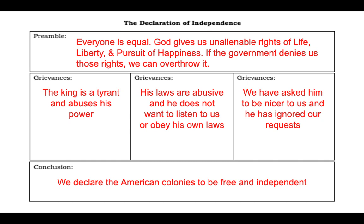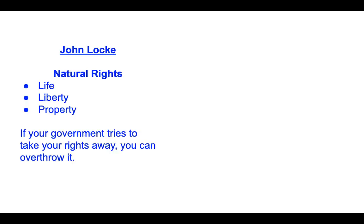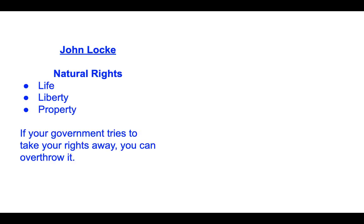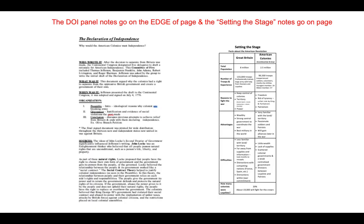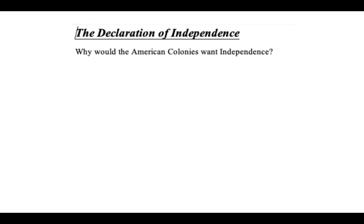That is the end of slide 41, giving a brief look at how the Declaration of Independence was broken down into those five separate parts. On slide 42, which we're about to start, we're going to take a deeper look into how we got the Declaration of Independence and what it was really about. Pause the video if needed, then go to slide 42.